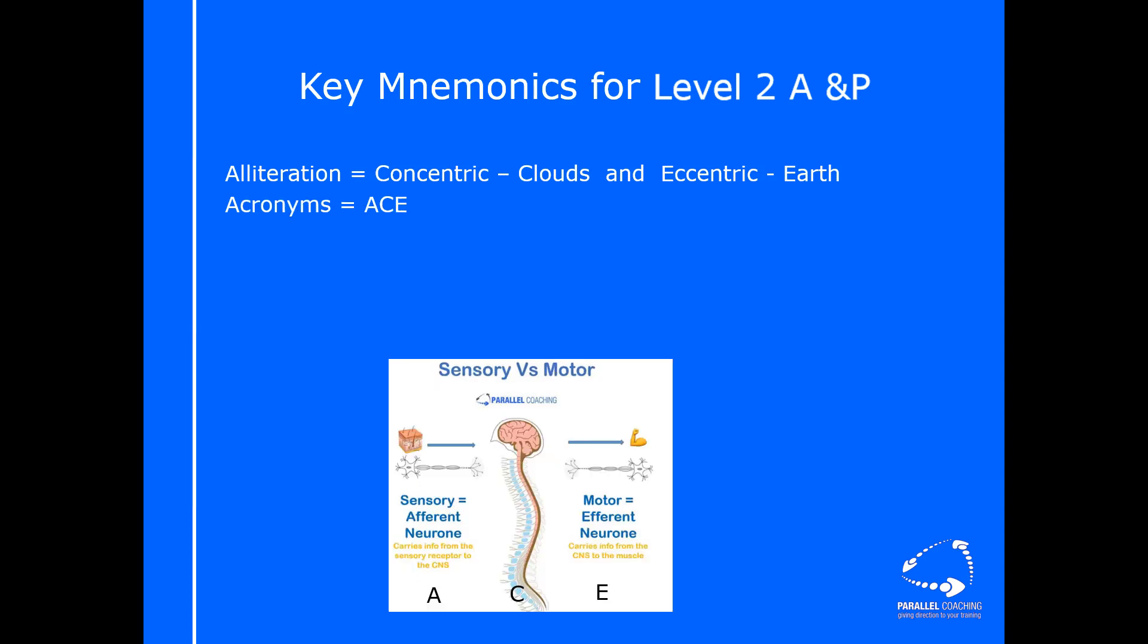Next one is acronyms. We're going to use ACE as our acronym. There's a lot of different acronyms we can use for level two anatomy and physiology. Have a look at the image that you can see on screen. You'll notice that in our nervous system, we have a couple of different specific areas.